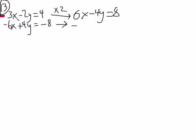I didn't do anything to the second equation. So that's negative 6x plus 4y equals negative 8.